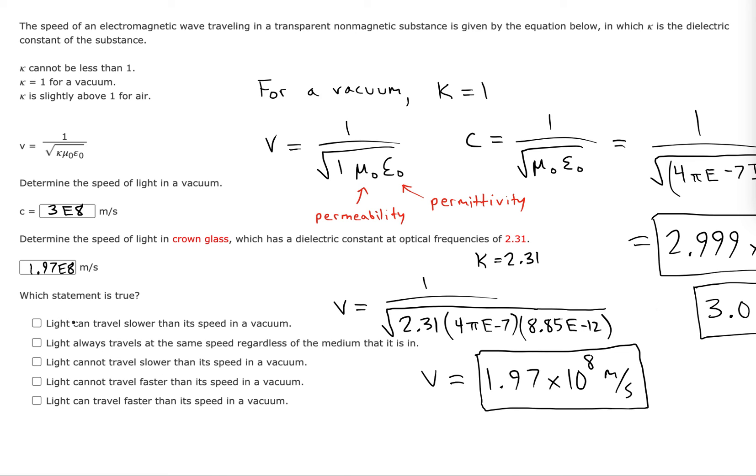Which statements are true? Light can travel slower than its speed in a vacuum. That's true. Light always travels at the same speed regardless of the medium. No. Light cannot travel slower than its speed in a vacuum. Wrong. Light cannot travel faster than its speed in a vacuum. That's actually true, because kappa is never less than 1.